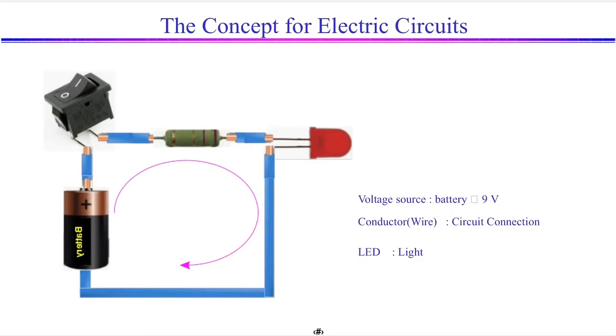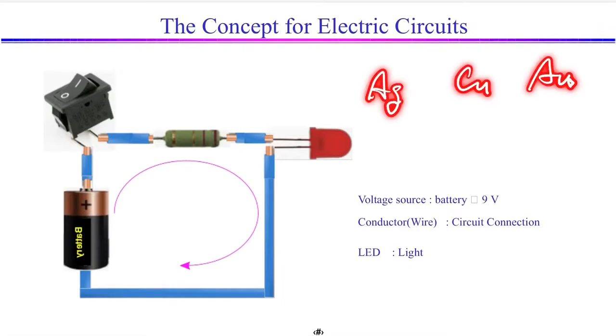Another material that conducts electricity well is silver. So the order of conducting electricity well is silver, copper, and gold.